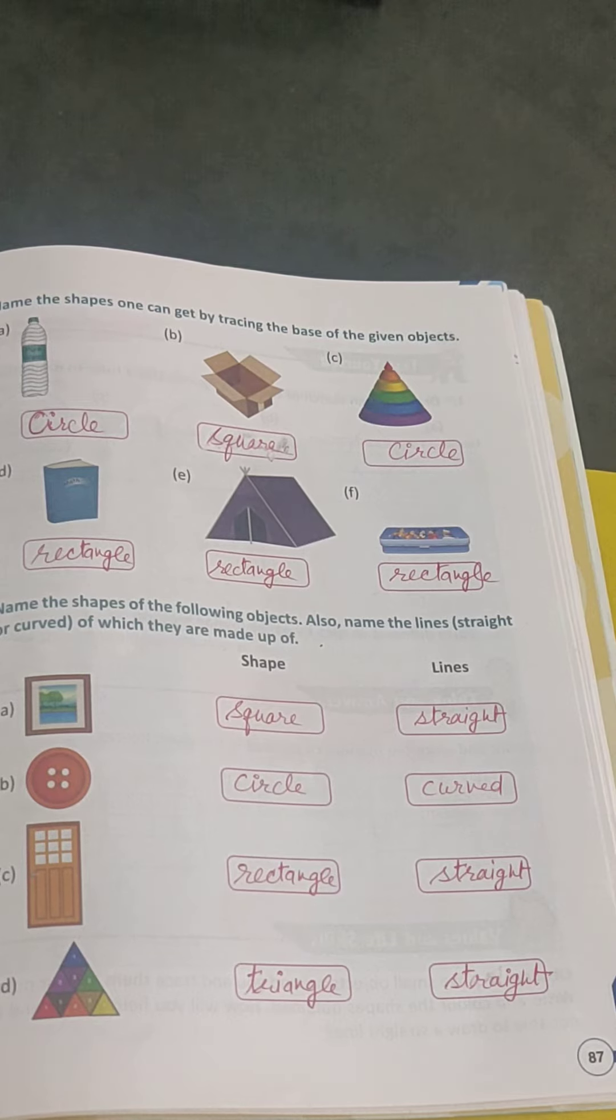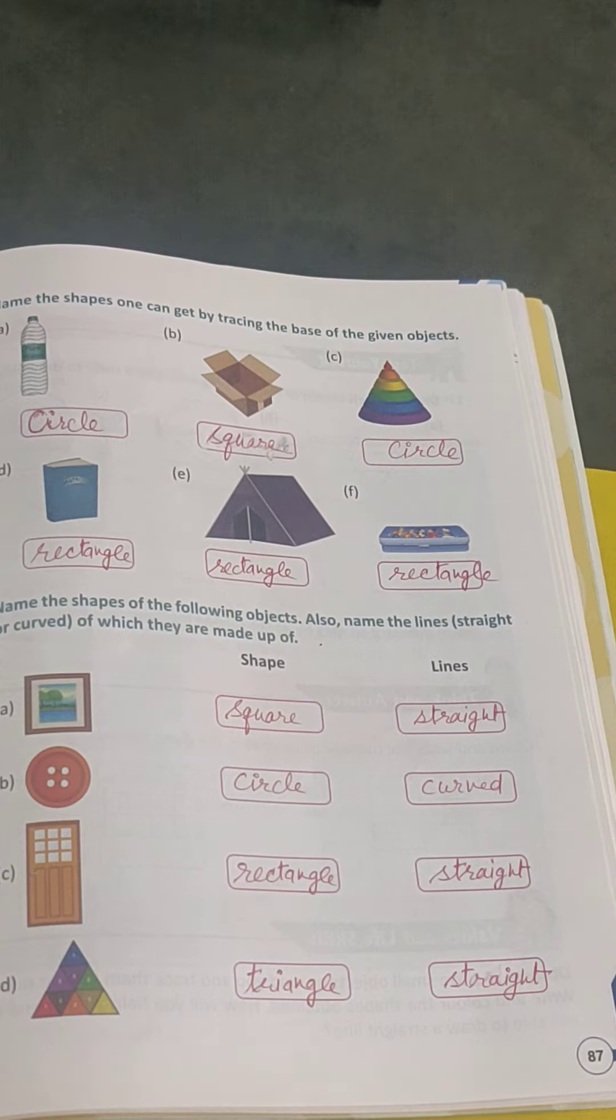Object C is a birthday cap. Circle. Object D is a book. Rectangle.